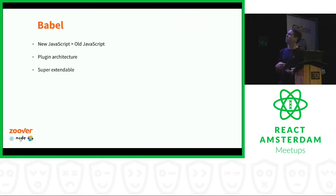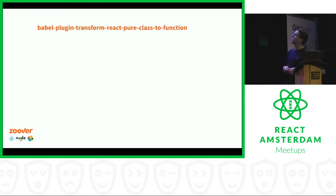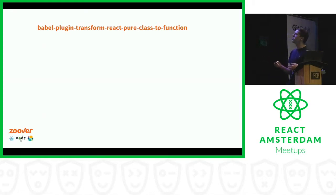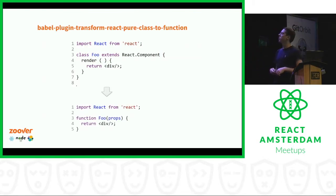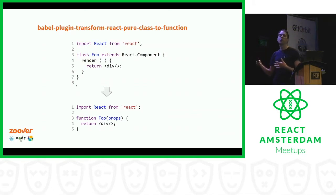To give you an idea of what's possible with Babel, there's a plugin called 'Babel Plugin Transform React Pure Class to Function.' If you're not familiar with the Babel plugin ecosystem, it seems like it's a sport to come up with the longest names. The idea of this plugin is to traverse your module, find a class component that only has a render function, and then change that class to a functional component — possibly for file size or performance reasons. Just to give you an idea of what's possible beyond compiling new to old.